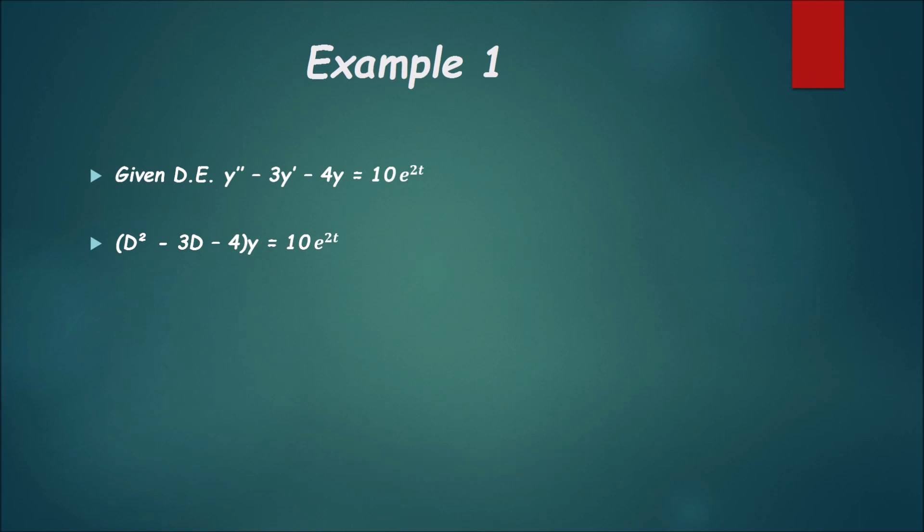What I did in this step is I made those there d squared times y minus 3dy minus 4y, but I just factored out the common y's in those three terms, and that's why it's on the outside of the parentheses. What's on the right side is the particular part we don't want to worry about that right now.